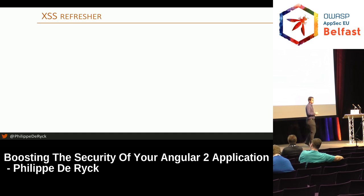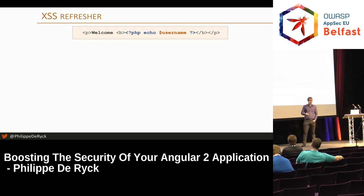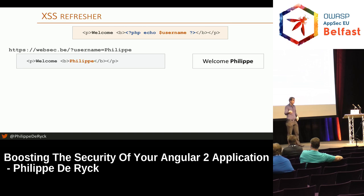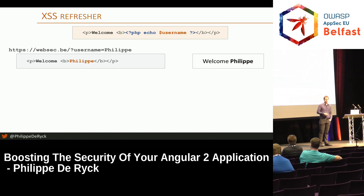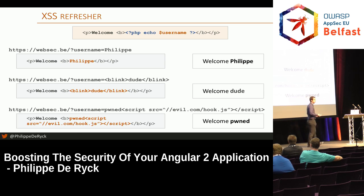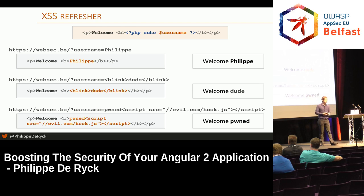A refresher on cross-site scripting — back to the PHP days. You had a page with some PHP code, and you put a variable into the page. If you take the variable from the URL, you're going to build a page with a name. But if somebody gives you a script tag, that's going to execute. If somebody gives you a remote script reference, you're going to load remote scripts into your page. This is the textbook definition of cross-site scripting.